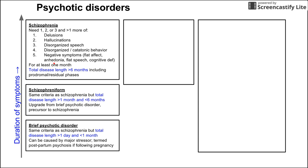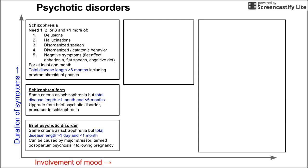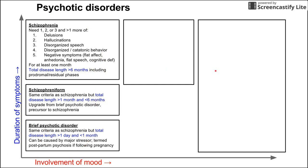Now we're going to add a second axis describing psychotic disorders with involvement of mood. For schizophrenia, schizophreniform, and brief psychotic disorder, there is low mood involvement — no concurrent mood disorder. But as we'll see for the next two disorders, involving mood may lead to a different diagnosis.